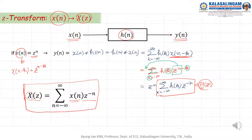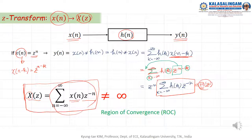Also, this summation term must converge — it must not go to infinity. For this, we need some conditions. We call this the Region of Convergence (ROC). In order for this term to converge and not go to infinity, we need the ROC.